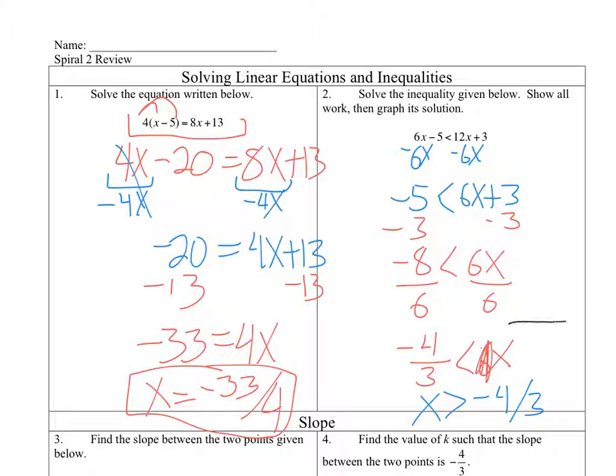Okay, so I make a number line. I'm going to put negative 4 over 3 on there. Because it's less than and not equal to, it's going to be an open circle. And if x is greater than it, it's going to go to the right.